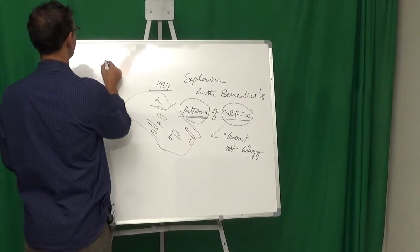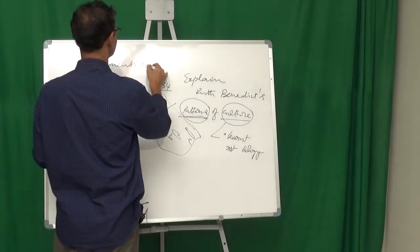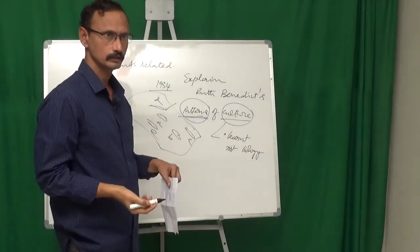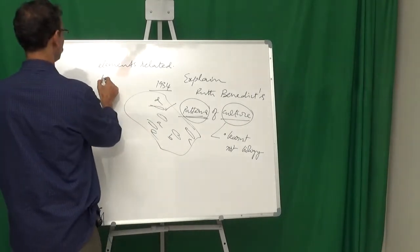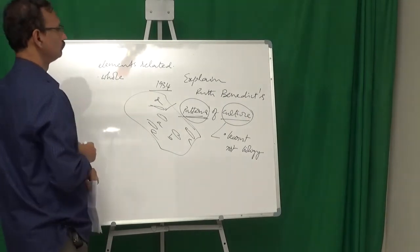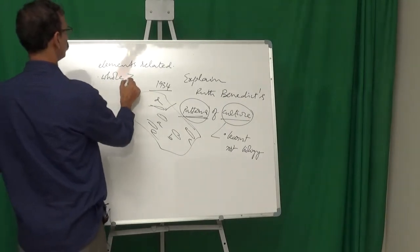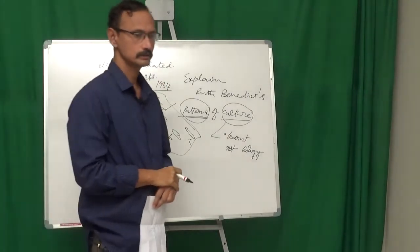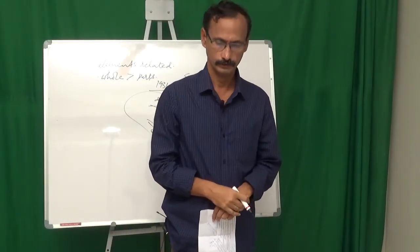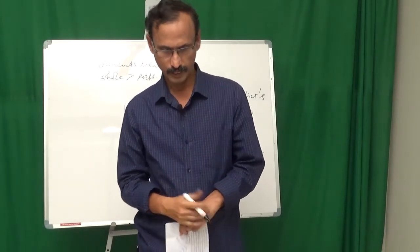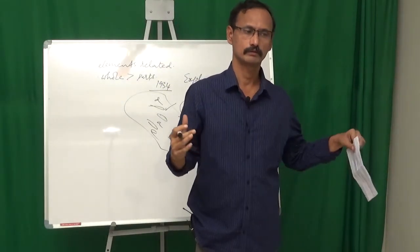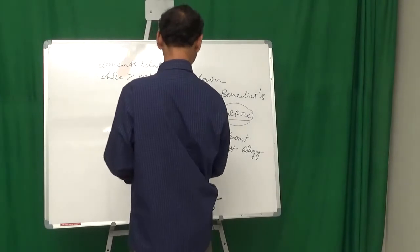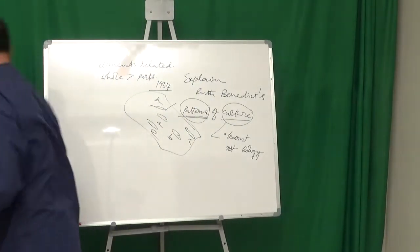Patterns means elements related. Related in a way is something comes out. It is a whole has more than parts. So the theme is the learned behavior of a society has certain elements and those elements are related that constitute a theme. That is a pattern. So that is what she wanted to say.